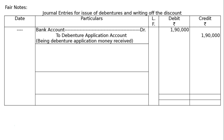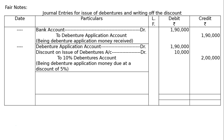First entry: Bank account debited to Debenture Application account — being debenture application money received. The amount is Rs. 2 lakh less 5%, that is Rs. 1 lakh 90,000 each. Next, Debenture Application account debited Rs. 1 lakh 90,000 and Discount on Issue of Debentures account debited Rs. 10,000, to 10% Debentures account Rs. 2 lakh. This 10% is the percentage of interest on debentures. Narration: being debenture application money due at a discount of 5%.